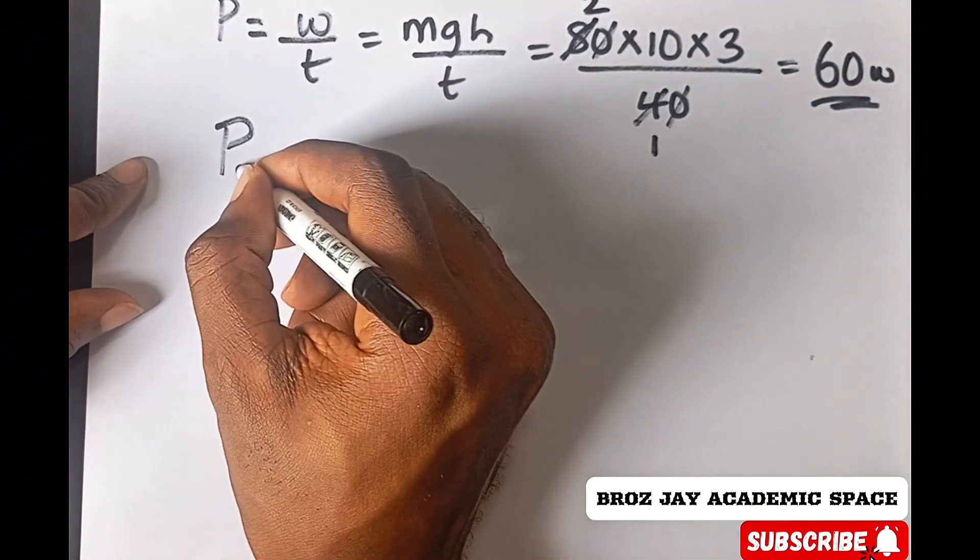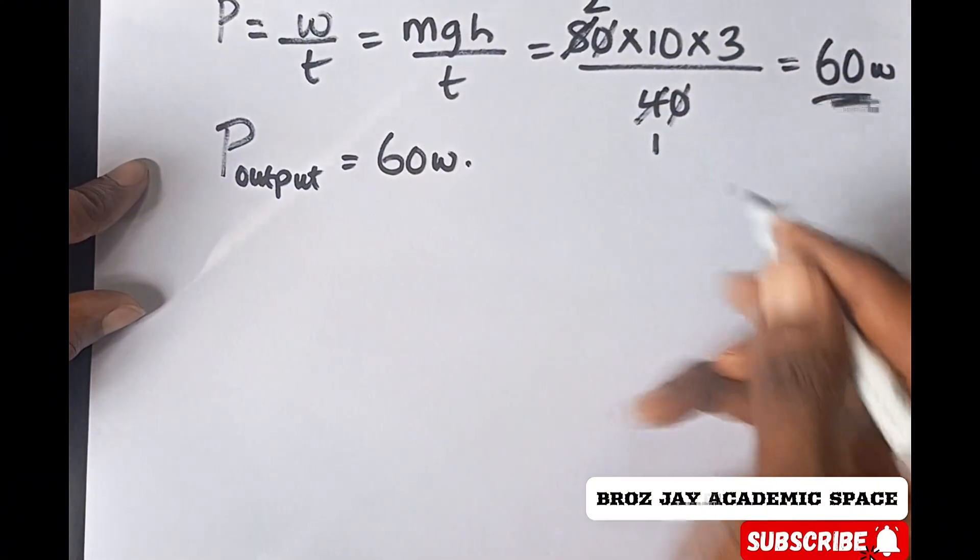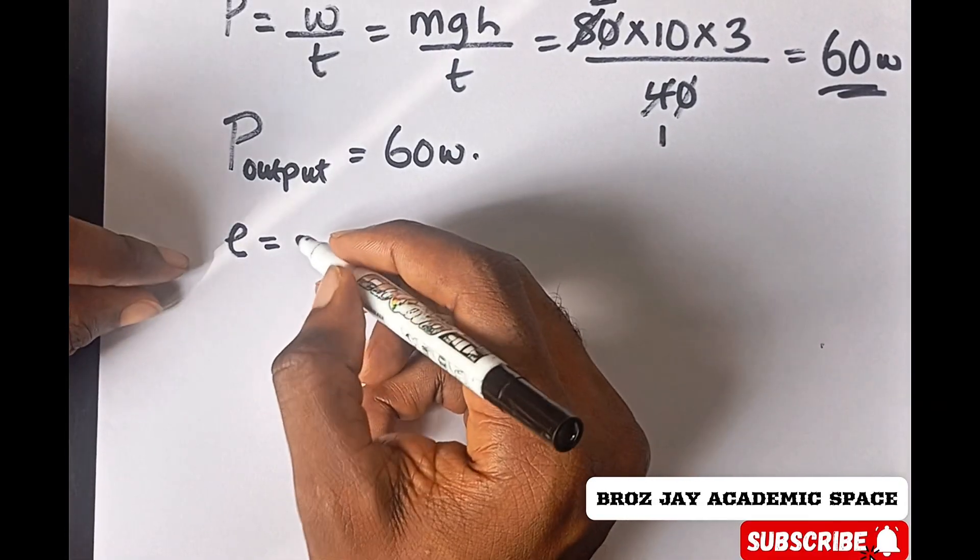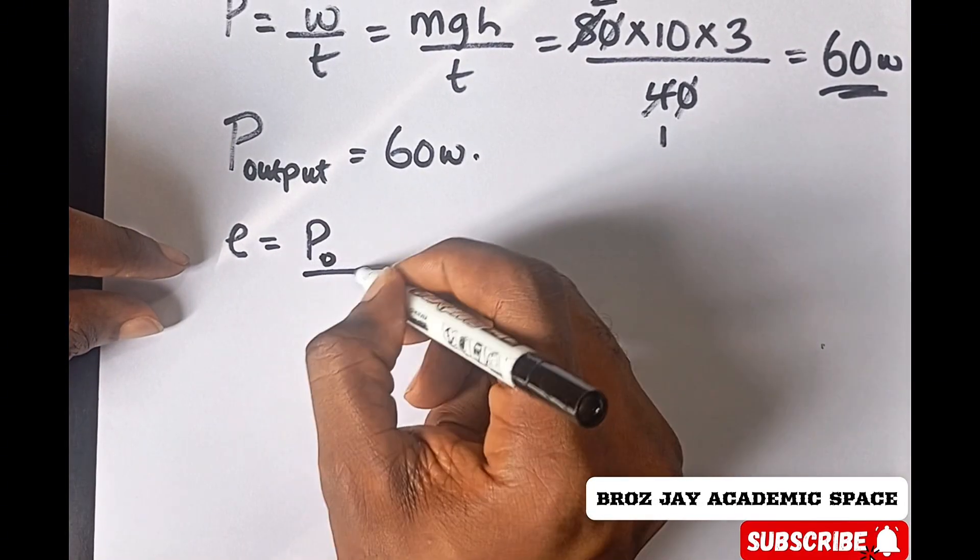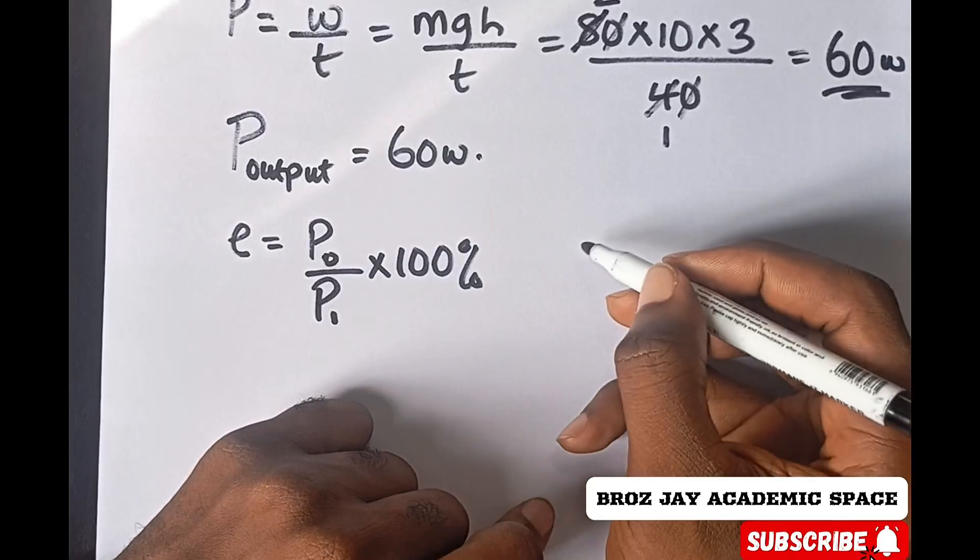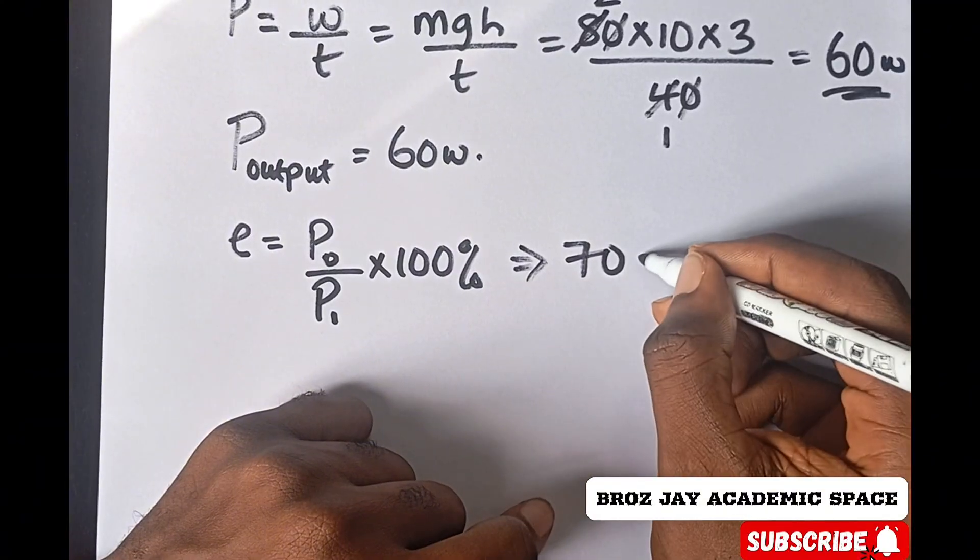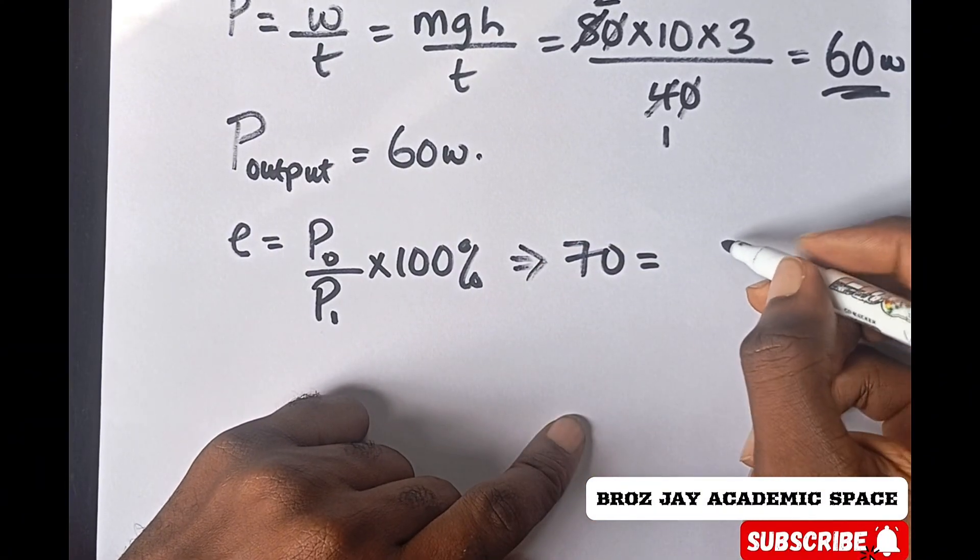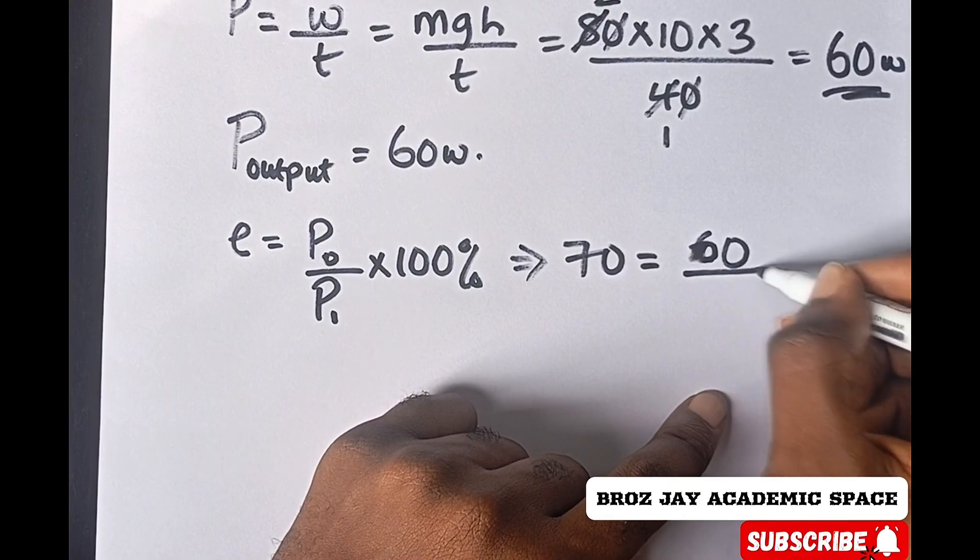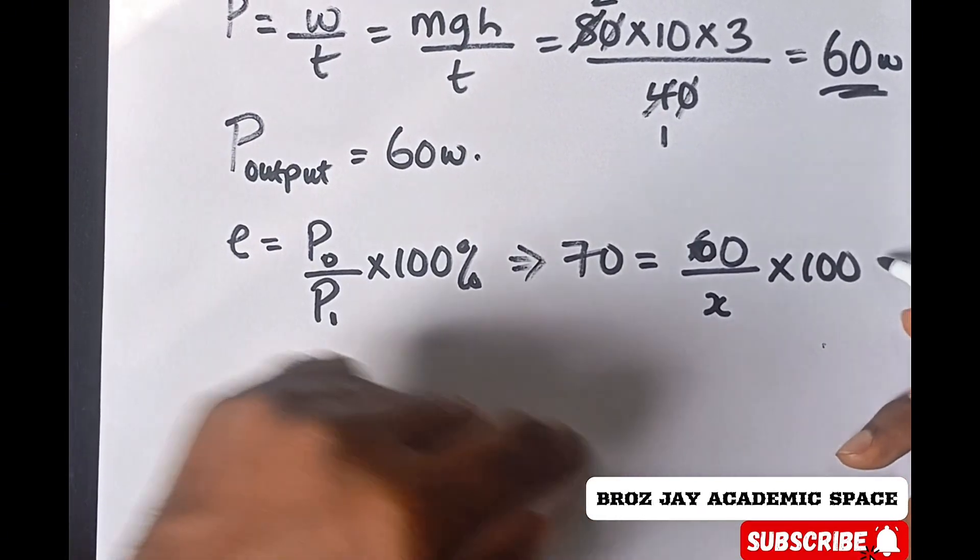My power output is 60 watts. How do I get my power input? Efficiency equals power output over power input times 100%. My efficiency was 70%, equals 60 over the input, which is unknown, times 100%.